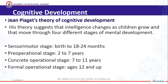Jean Piaget came up with a theory of cognitive development, and he postulated that intelligence changes as children grow. Every individual moves through four different stages of mental development. The four stages Piaget talked about were the sensorimotor stage from birth to 24 months, the pre-operational stage from two to seven years, the concrete operational stage from seven to eleven years, and the formal operational stage from twelve years and above.